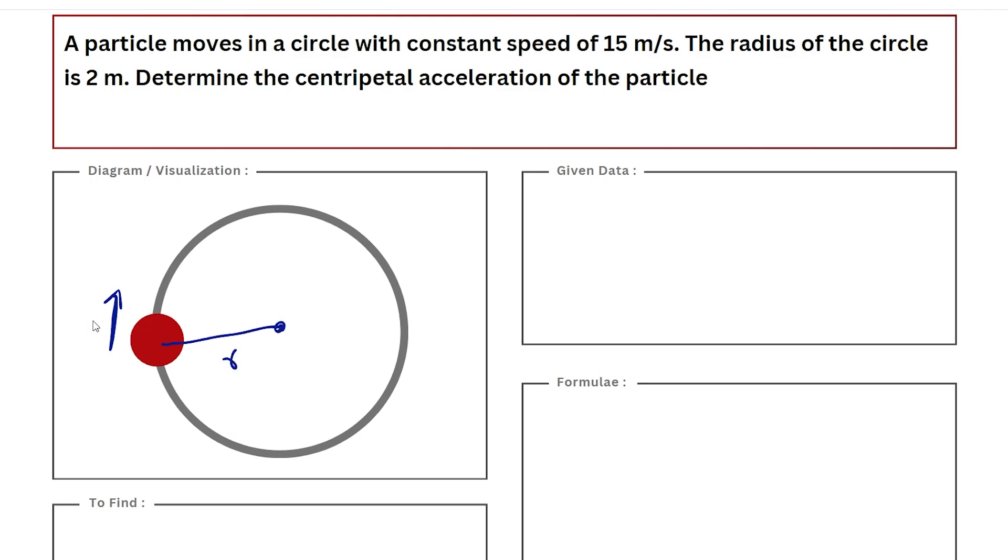So it's a pretty easy question. Let's quickly solve this. The data that's been given to us: we have been given the uniform speed, that is 15 meters per second. This is the tangential speed. And the second quantity that's been given to us is the radius of the circle, 2 meters.